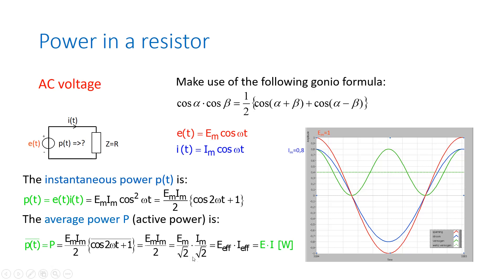Now let's split up the number 2 as the square root of 2 times the square root of 2. Then we get the average power equals Em divided by the square root of 2, times Im divided by the square root of 2. By definition, this is the RMS voltage and this is the RMS current. So the average power in this resistor caused by the AC voltage is equal to the RMS voltage times the RMS current. The RMS voltage is written as the capital E, and the RMS current is written as the capital I.